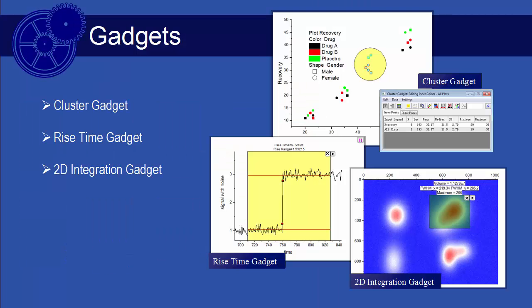Origin supports more than 10 gadgets to perform exploratory analysis by interacting with data plotted in a graph. Origin Pro adds these advanced gadgets to this collection: a cluster gadget for statistical analysis of graph data, a rise time gadget for signal analysis, and a 2D integration gadget.